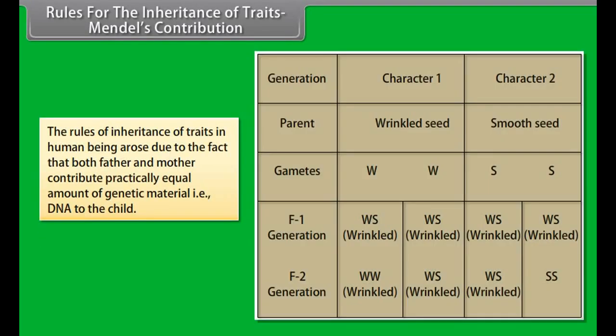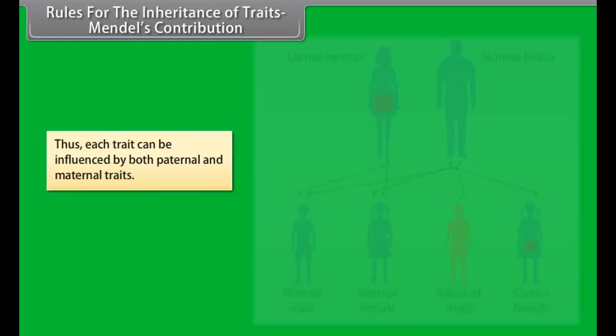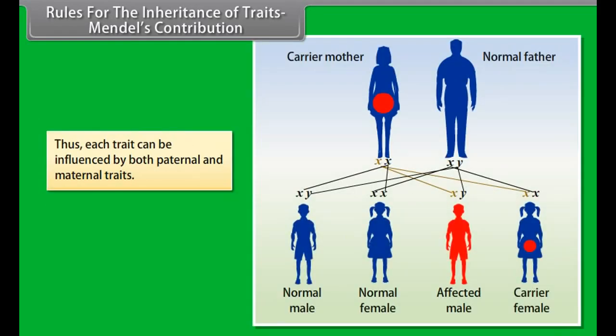Activity: human ears are of two types — ears with free ear lobes and ears with fused ear lobes. We can understand the process of inheritance more clearly by observing ears of all the students in the classroom. We find that most of our friends have free ear lobes while some of them have fused ear lobes.